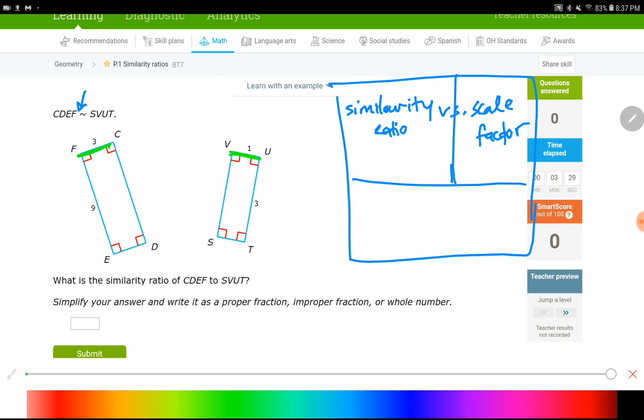So all you have to do is write a fraction that shows you what 3 to 1 is. So 3 to 1. That's my answer. But in here it says, simplify your answer and write it as a proper fraction, improper fraction or whole number. So I can write this as a whole number. So it is 3 over 1 equals to 3. That would be my answer.